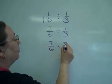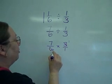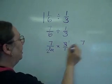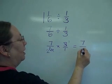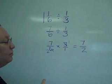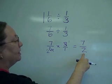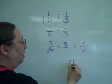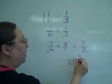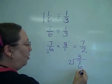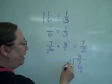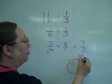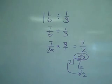Doing a little bit of reducing, 3 goes into 3 once, 3 goes into 6 twice. We've got 7 times 1 is 7, 2 times 1 is 2, by multiplying the tops, multiplying the bottoms. This needs to be reduced. 2 goes into 7 three times with 1 left over. 1 is the top of the fraction, 2 becomes the bottom of the fraction, so 3 and 1 half is my answer.